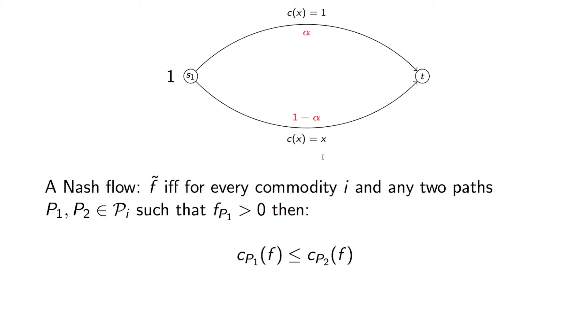And this is what defines a Nash flow. A Nash flow, F tilde, is basically a flow such that all used paths, so all used sets of edges from sources to sinks, are minimal.